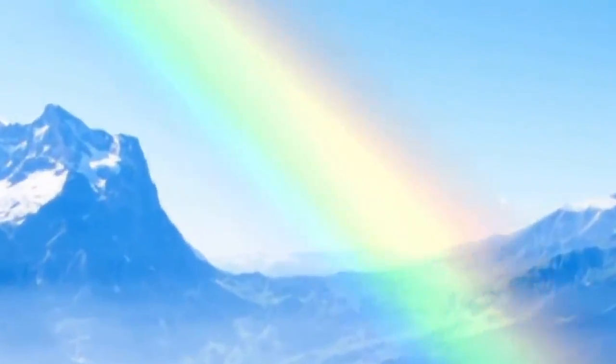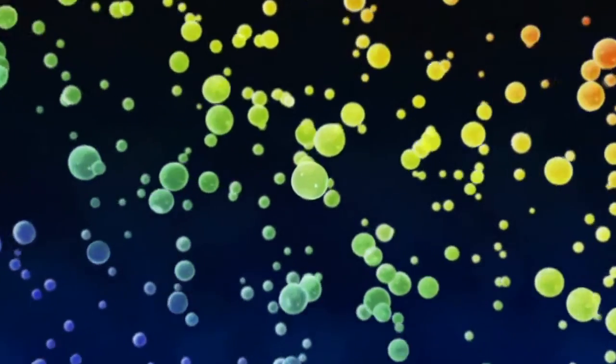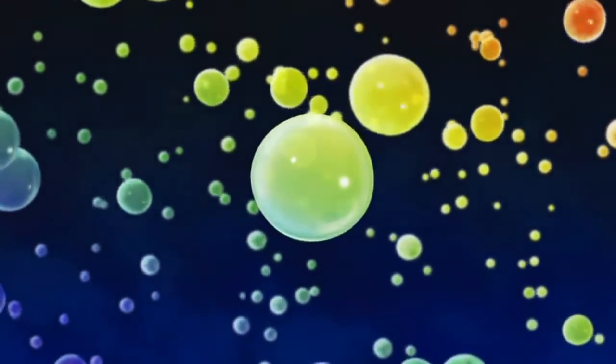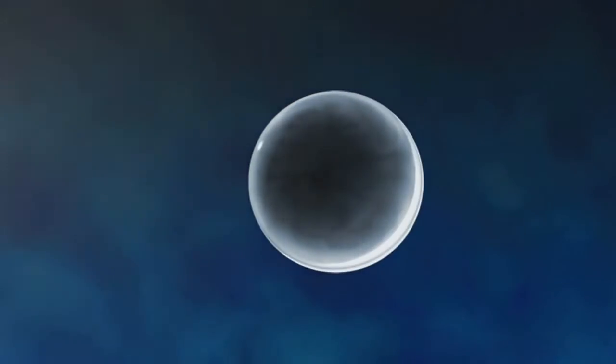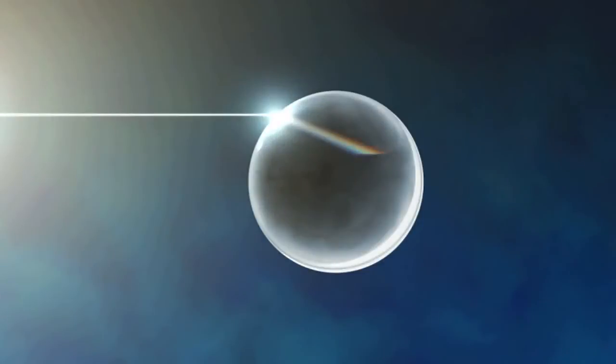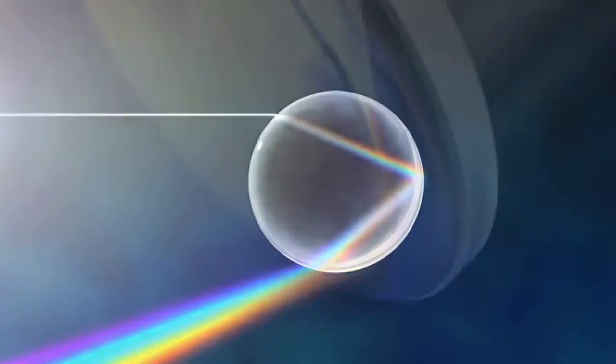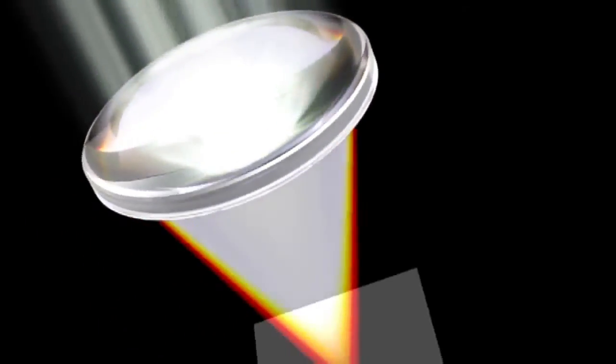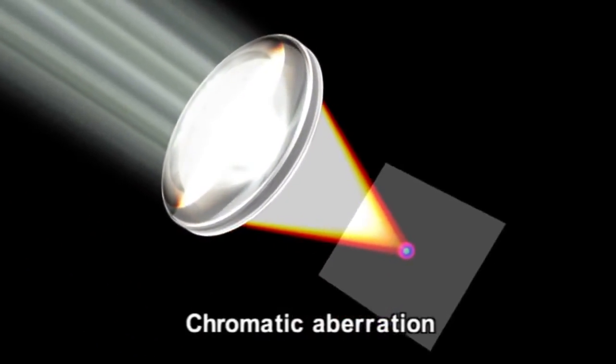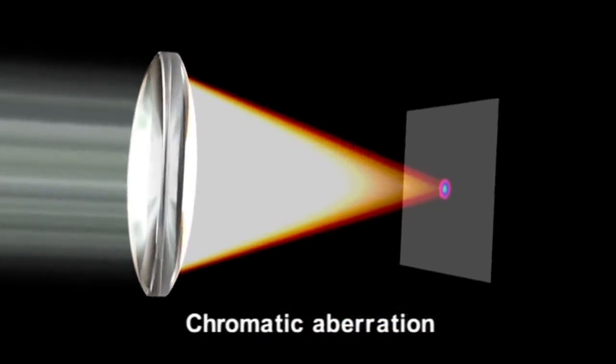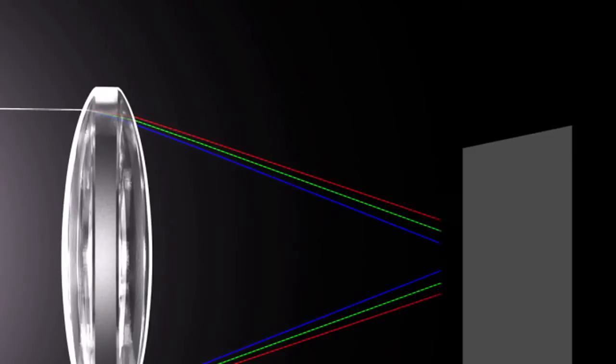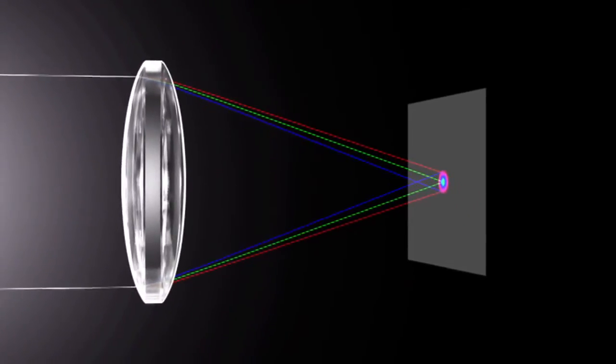There is also the problem of chromatic aberration. A rainbow is formed when the light passing through water droplets is refracted. Different refraction wavelengths cause the different colors of the rainbow. This same principle causes chromatic aberration in lenses. The focal point for blue light, which has a short wavelength, is closer than that for red light, which has a long wavelength. This causes the colors to bleed.